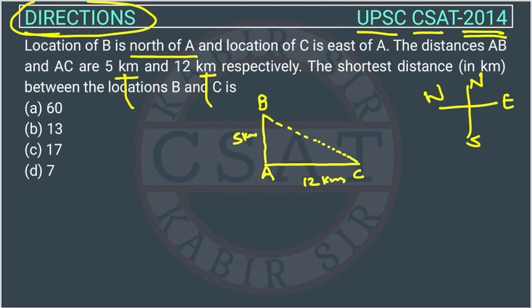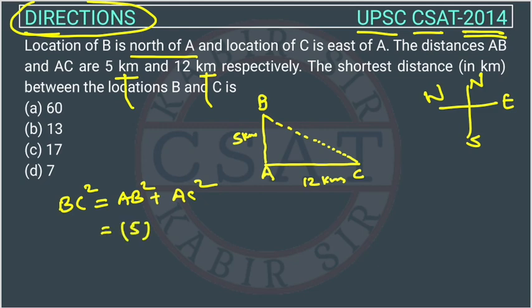Here we will use the Pythagoras theorem. According to the Pythagoras theorem, if we have a right angle triangle, then BC² = AB² + AC². So, BC² = 5² + 12², which is 25 + 144, and the total will be 169.